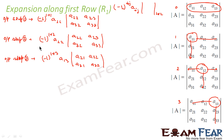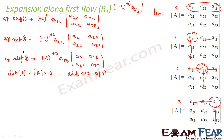So the determinant of A is nothing but the sum of all outputs from Step 1, Step 2, and Step 3. Let me simplify: minus one to the power two is one, so the first term becomes a11 multiplied by the determinant of the 2×2 minor.